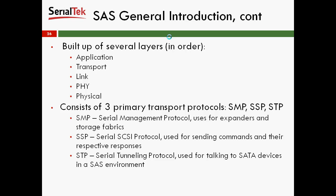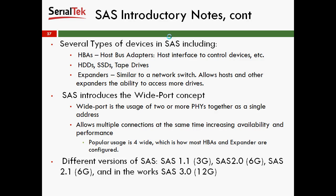The cost per gigabyte between Serial ATA and SAS is not substantial, but it's enough for there to be a difference between the two. There are several types of devices in SAS, including HBAs (host bus adapters), HDDs, SSDs, tape drives, and expanders, which are similar to a network switch. Expanders allow hosts and other expanders the ability to access more drives and more expanders across them.